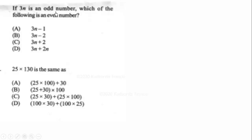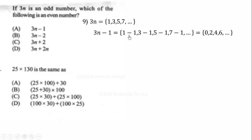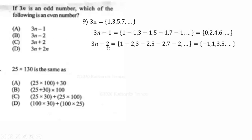If 3N is an odd number, which of the following is an even number? We are given that 3N is odd. Let us pick some odd numbers: 1, 3, 5, 7. Now let us subtract 1 from each — 3N minus 1 gives us 0, 2, 4, 6 — these are all even numbers. Let us try 3N minus 2: that gives negative 1, 1, 3, 5 — these are not even numbers.